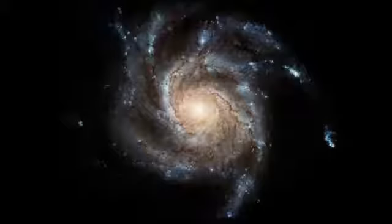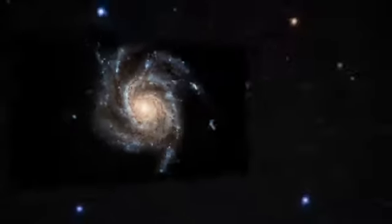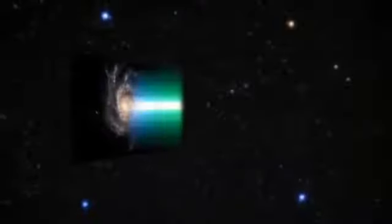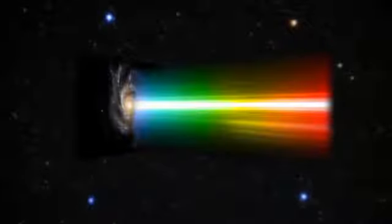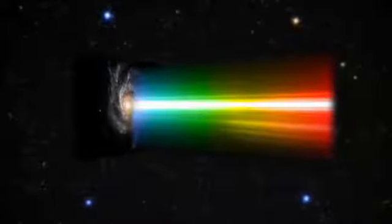A distant galaxy's spectrum reveals which elements it's made of. Every substance affects or emits light in a particular way, imprinting a series of bright or dark lines in the spectrum that betrays its presence.